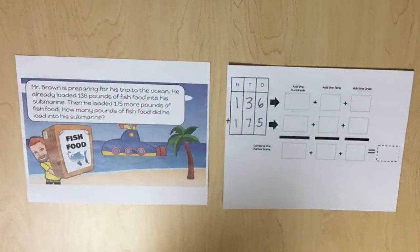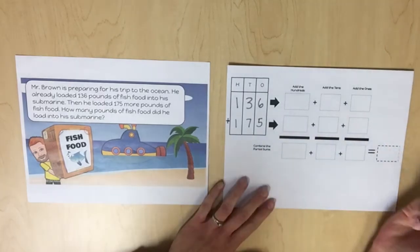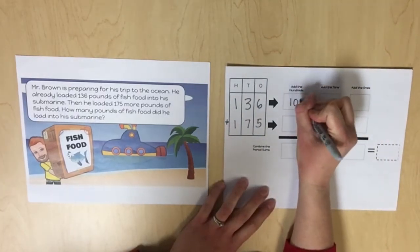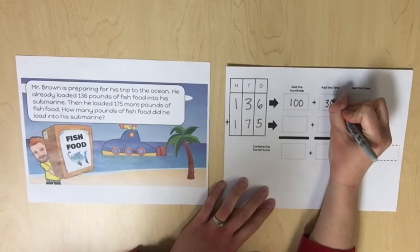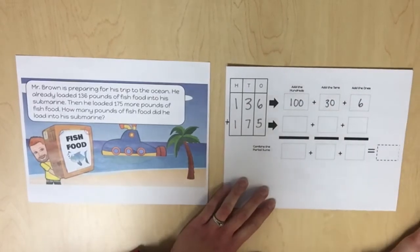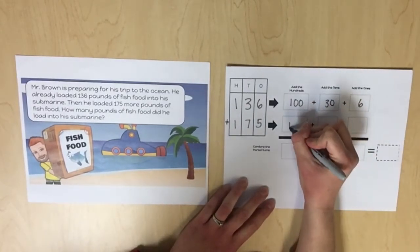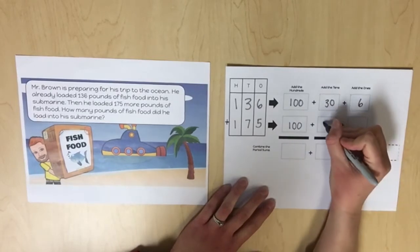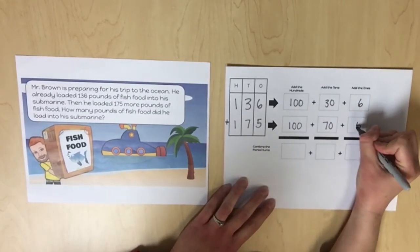An additional strategy students may utilize when adding three-digit numbers is the partial sums method. This is an optional strategy for students who are familiar with the partial sums method. Students should decompose each addend and add the like values. So 136 can be decomposed into 100 plus 30 plus 6, and 175 is decomposed into 100 plus 70 plus 5.